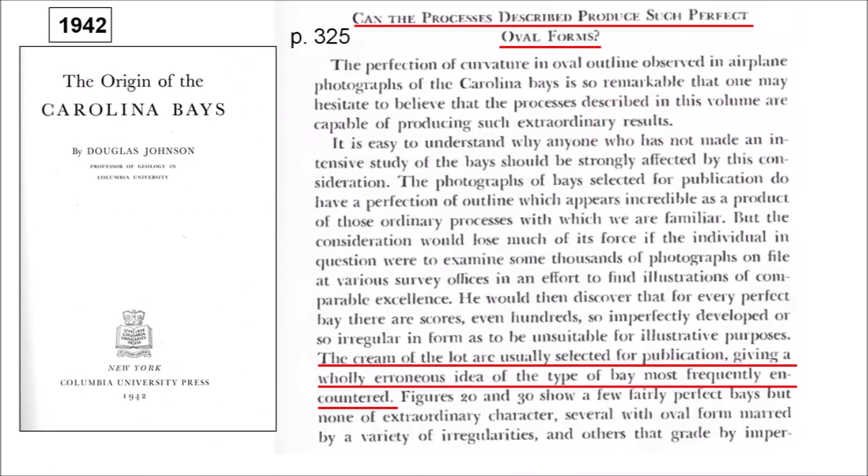In 1942, Douglas Johnson, a professor of geology at Columbia University, wrote a book about the origin of the Carolina Bays. Johnson refused to consider the elliptical geometry of the bays and throughout his book he referred to the bays as having an oval form. On page 325 of his book, Johnson claims that the images selected for publication are specifically chosen for their excellent regularity and that this gives a completely erroneous idea of the type of bays that are most frequently encountered. Johnson proposed that the Carolina Bays formed by a combination of wind and wave action on lakes formed by artesian springs.